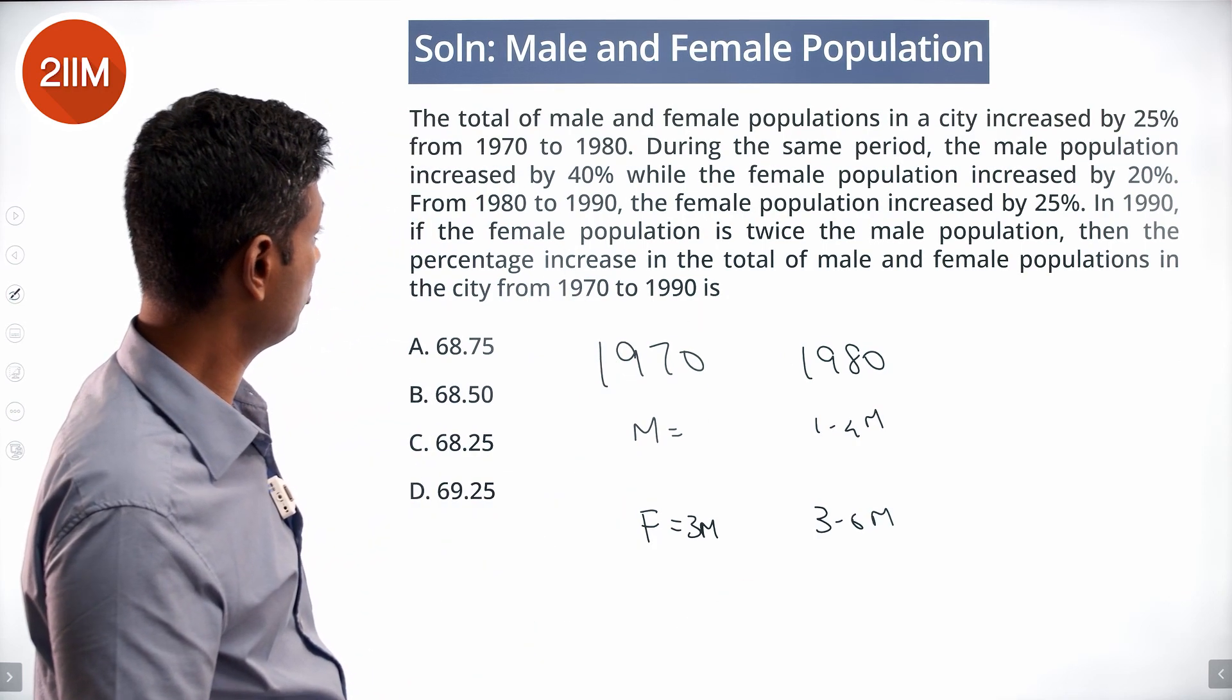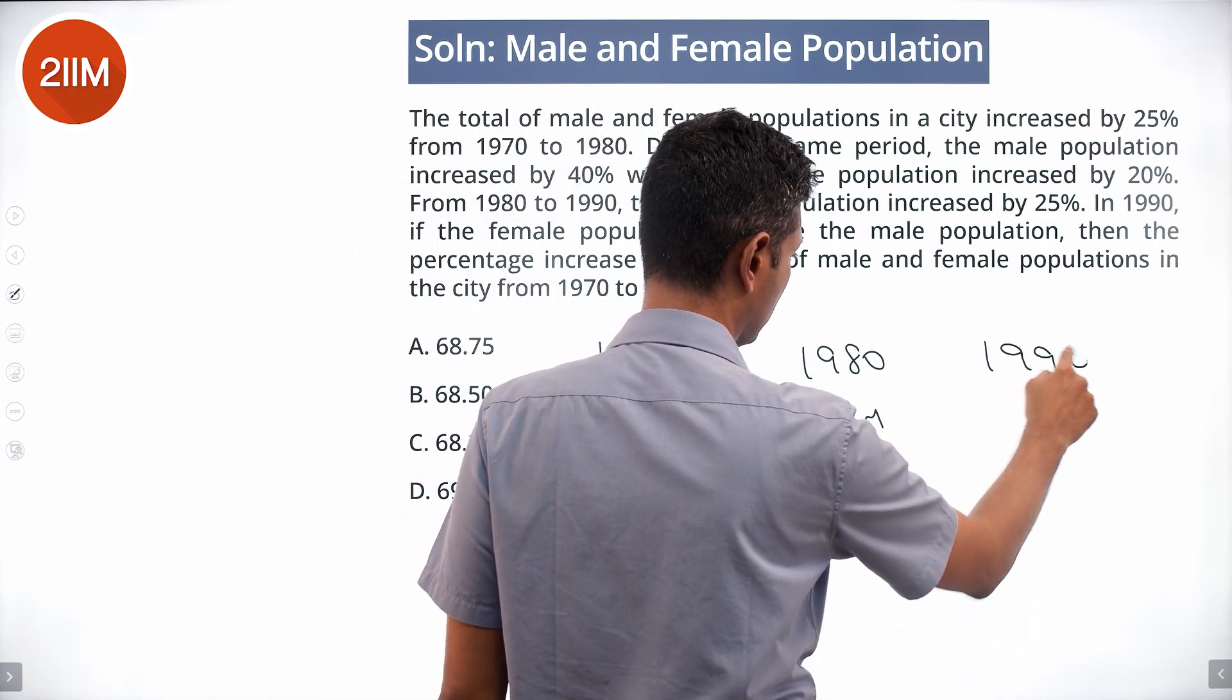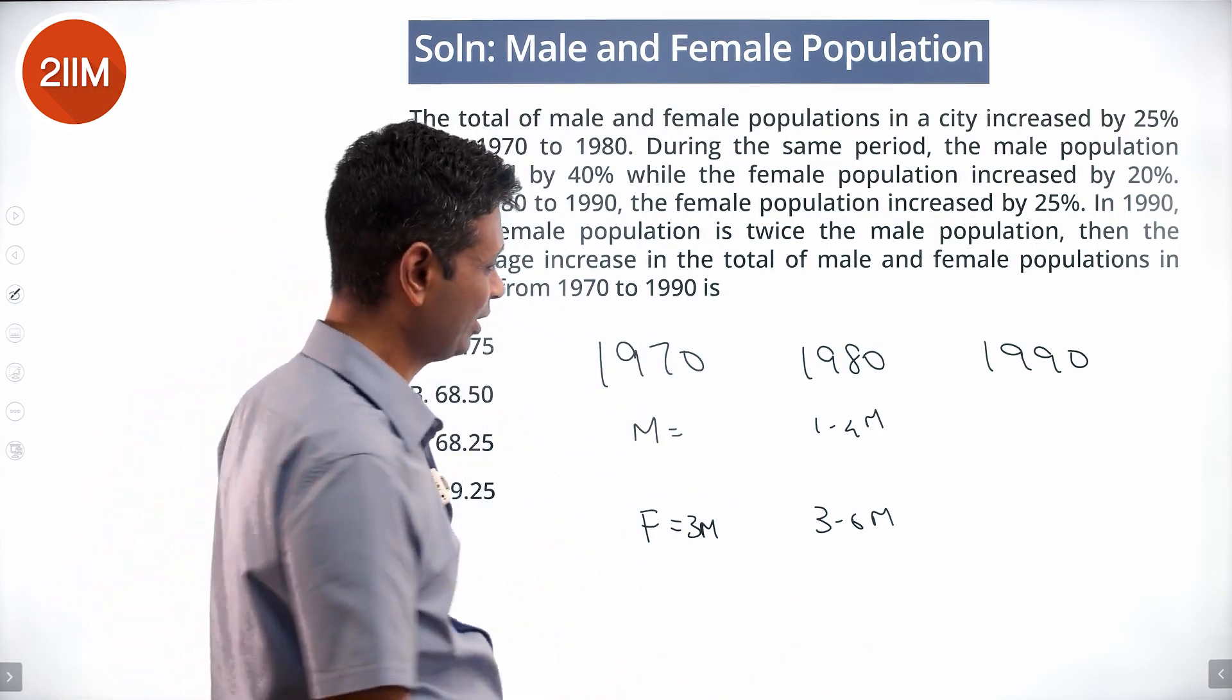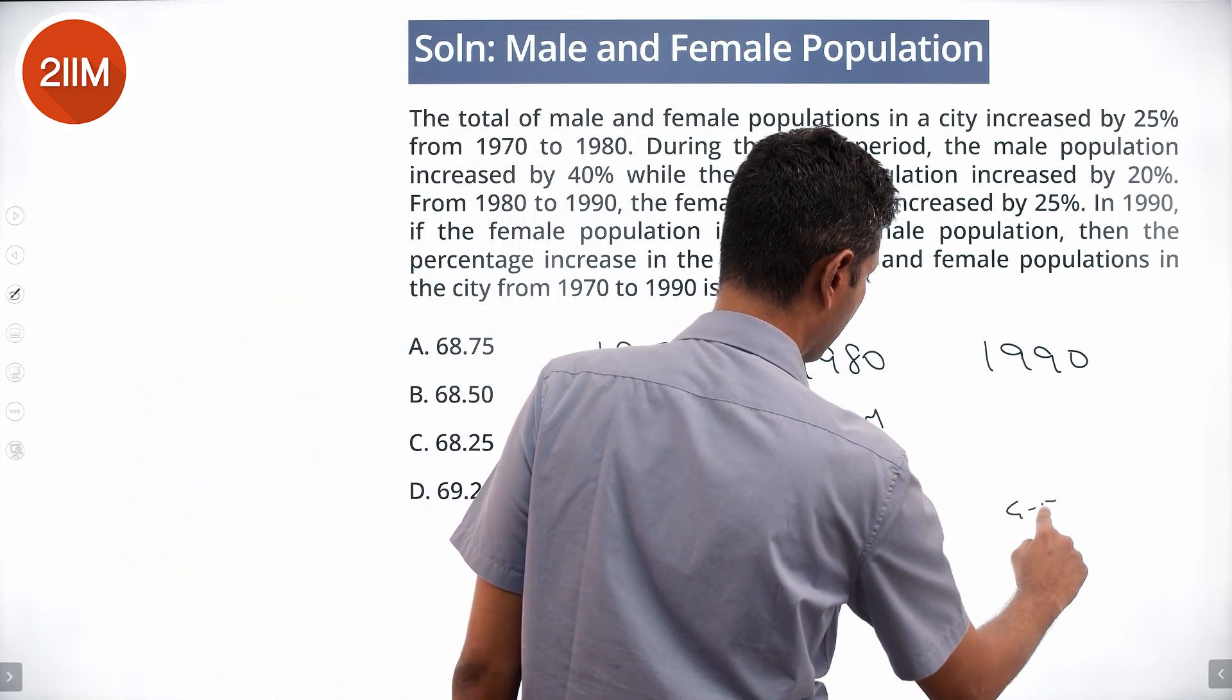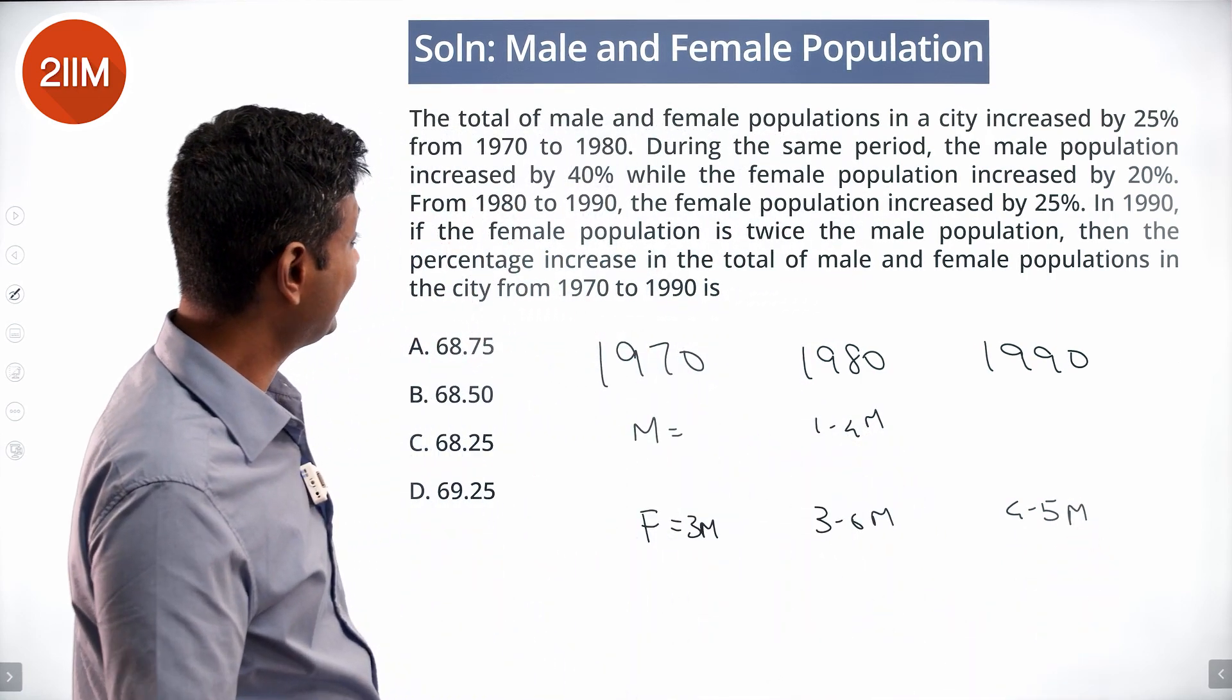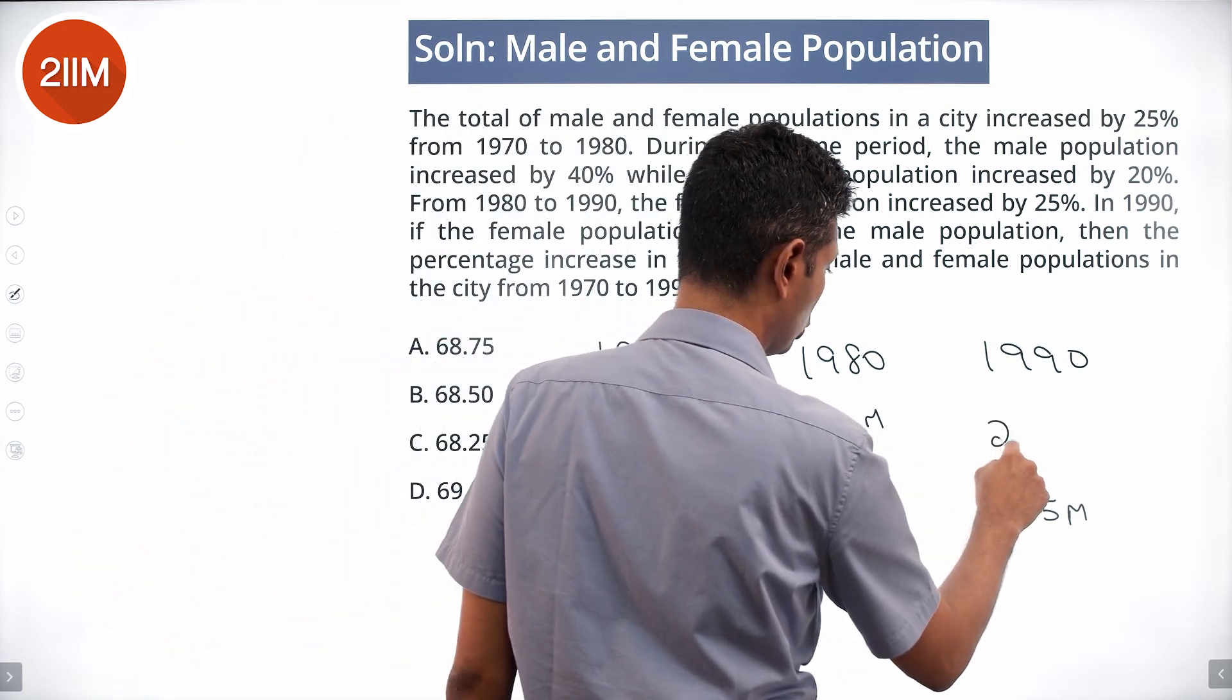The female population increased by 25%. So in 1990, this increased by 25%—that's one-fourth, which is 0.9M—this goes to 4.5M. In 1990, the female population is twice the male population, so the male population should have been 2.25M.